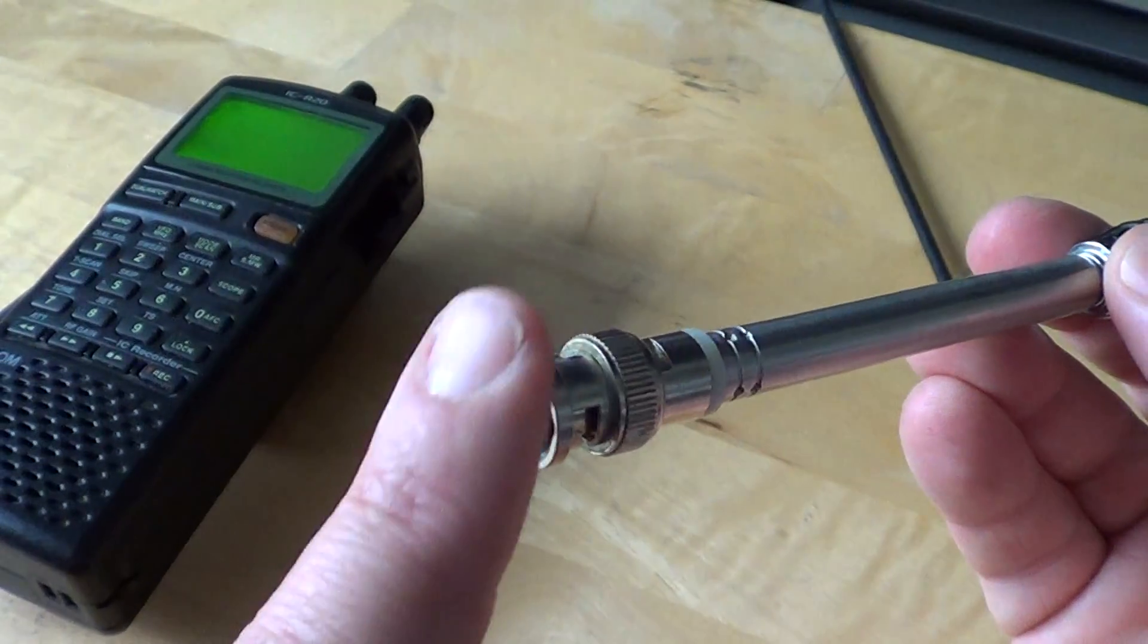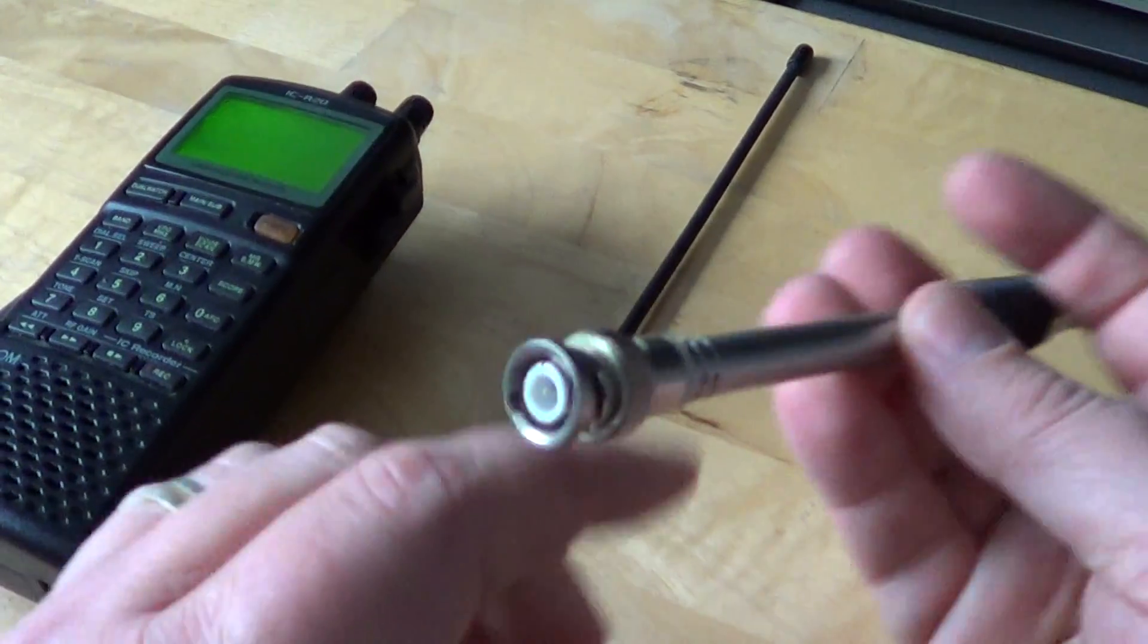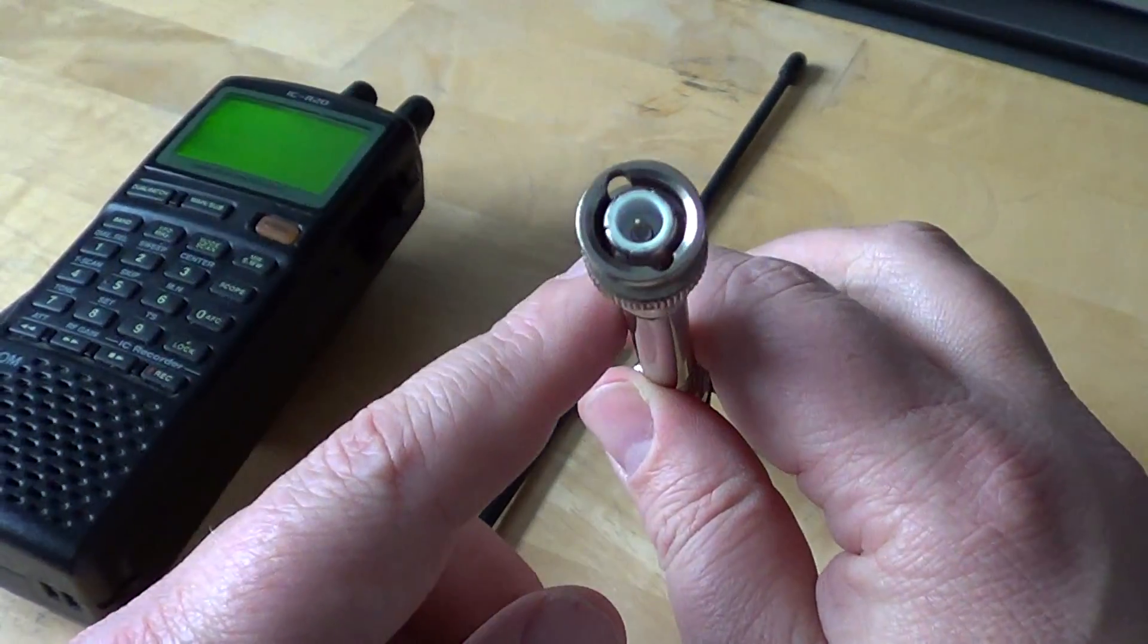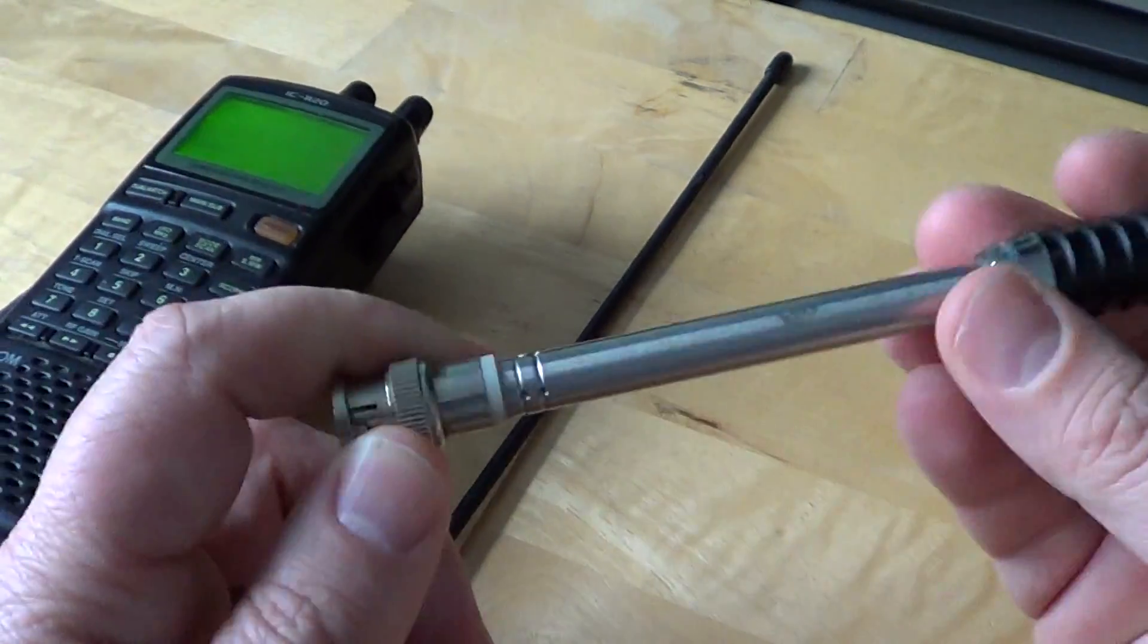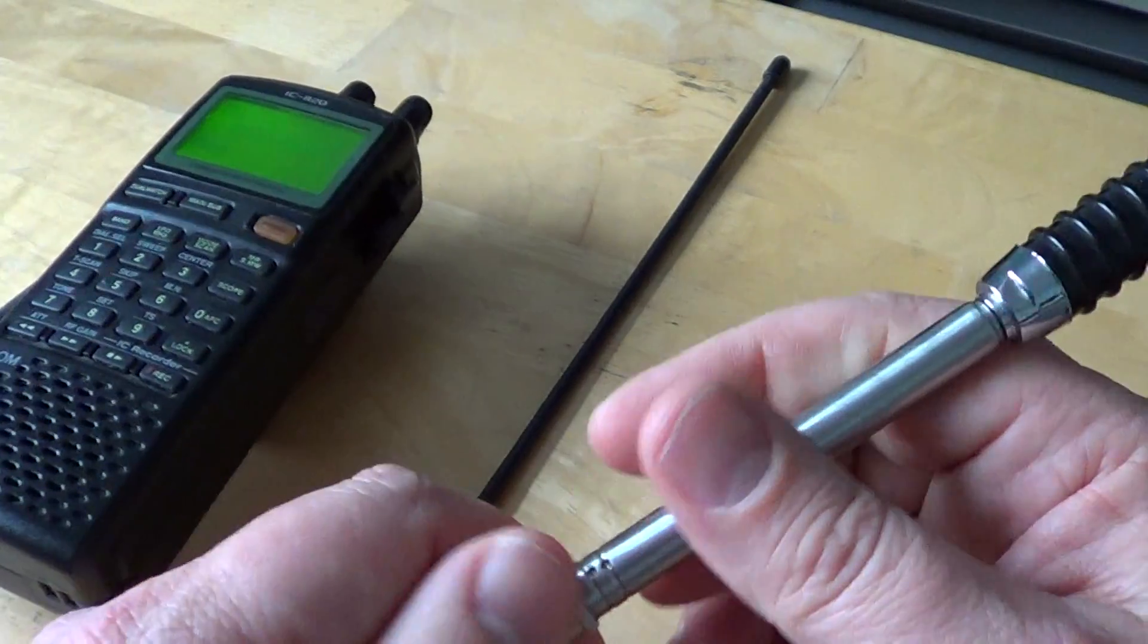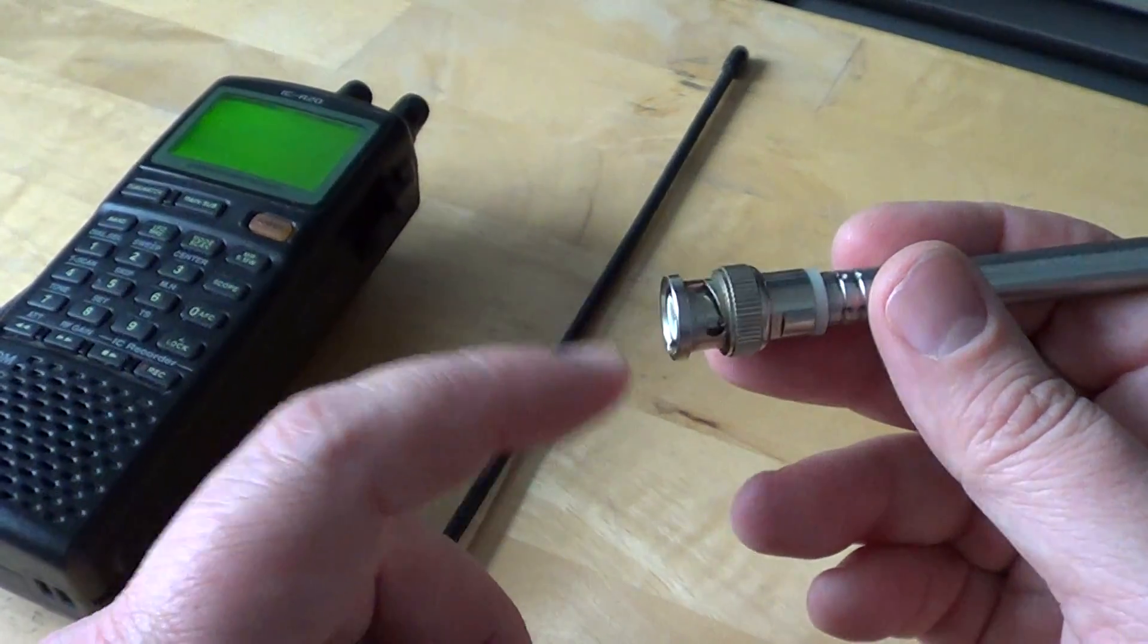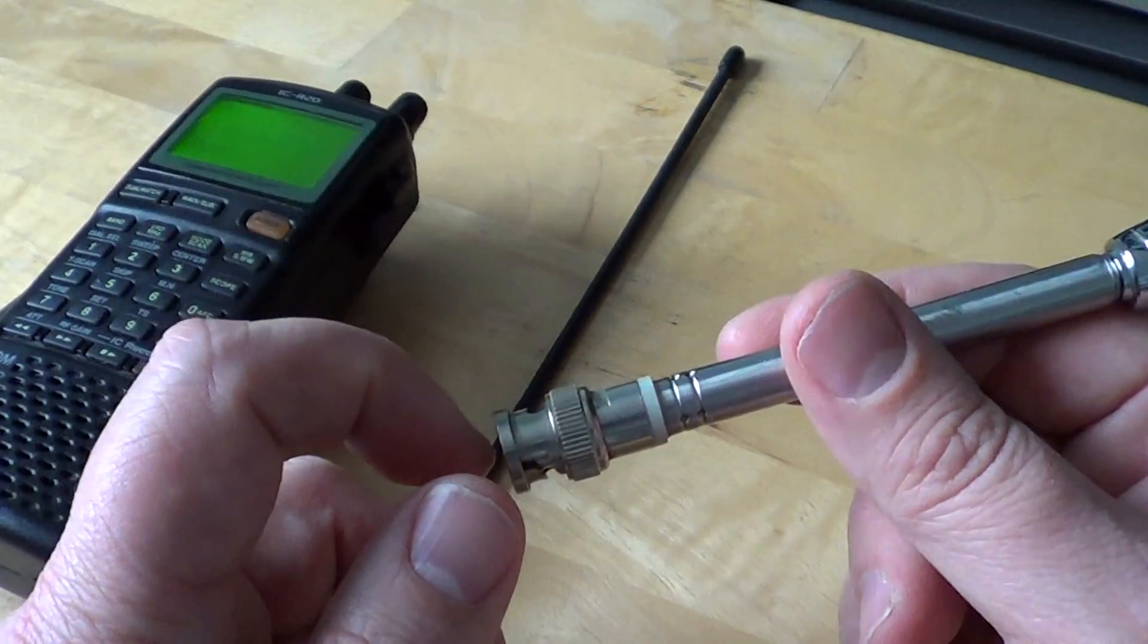The only thing you have to be careful when you buy an antenna is the connector. Most scanners today use BNC, which is this type of connector, but be sure that you have the good connector for your antenna. You can use an adapter, but the best you can do is have the antenna with the good connector right away.